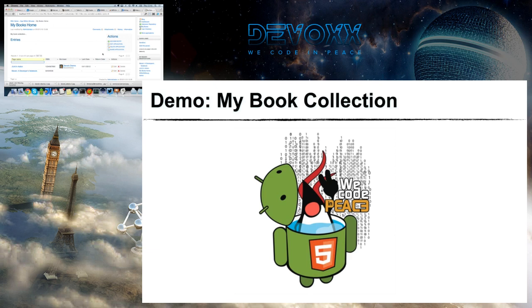In a few minutes, I've been able to create a very simple but already useful application where you can enter structured data. My users can come into the wiki and use it. Now I can do one more thing — I can share it, because xWiki allows you to install extensions, and I can share my application as an extension so that others can install it.